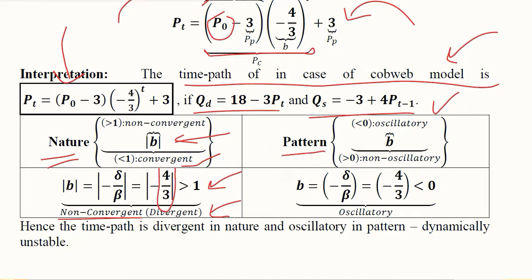But when we talk about the pattern, it is determined by the actual value b, and here it is with a negative sign so it is less than 0. It means that we are dealing with an oscillatory case. The time path in this case would be divergent in nature as well as it will be oscillatory in pattern. It is definitely dynamically unstable because it is divergent.